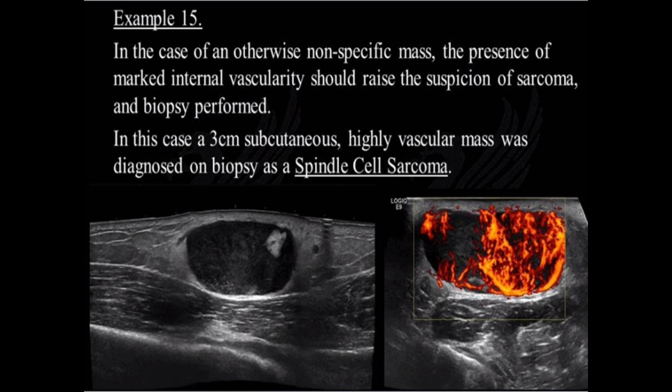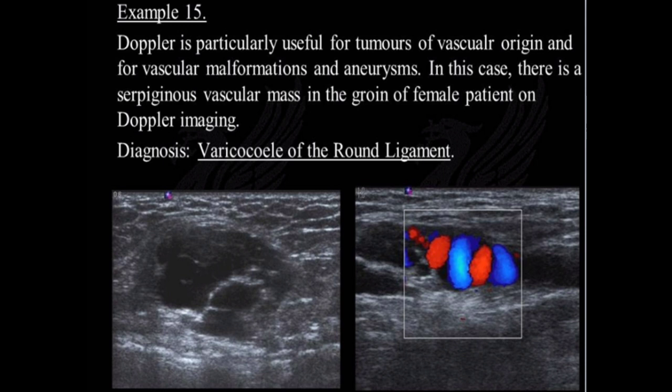Example 16: Doppler is particularly useful for tumors of vascular origin and for vascular malformations and aneurysms. In this case, there is a serpiginous vascular mass in the groin of a female patient on Doppler imaging. Diagnosis: varicocele of the round ligament.